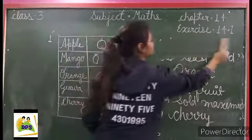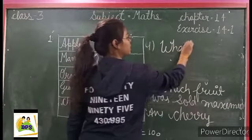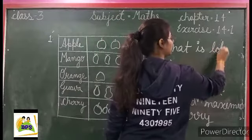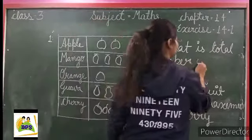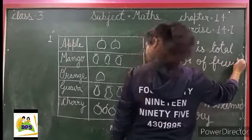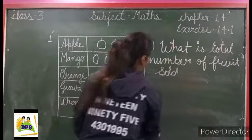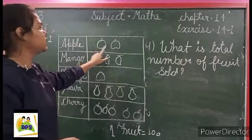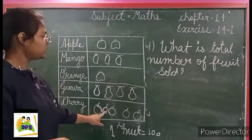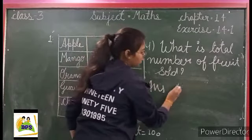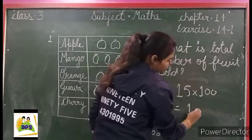Question number four: what is the total number of fruits sold? Total number of fruits sold. Counting all: one, two, three, four, five, six, seven, eight, nine, ten, eleven, twelve, thirteen, fourteen, fifteen. Each fruit equals 100, so fifteen multiplied by 100 equals 1500.